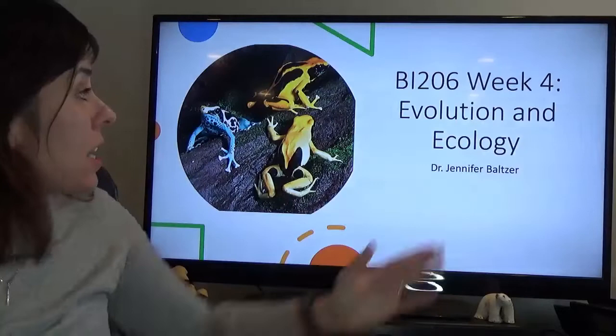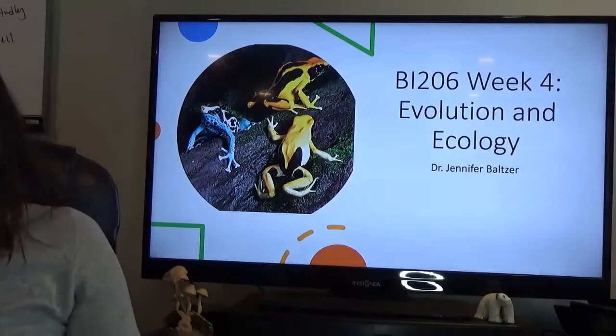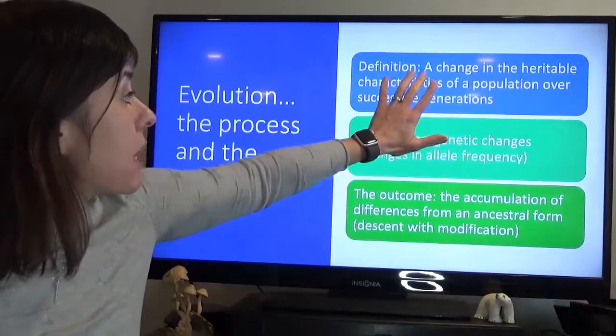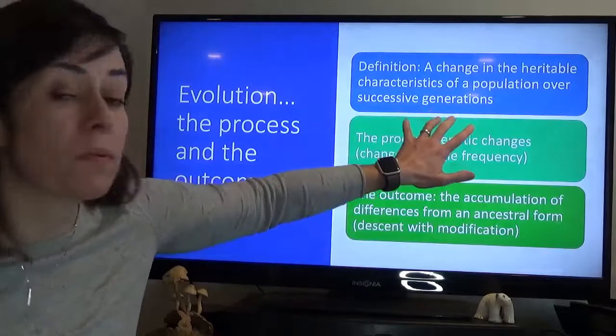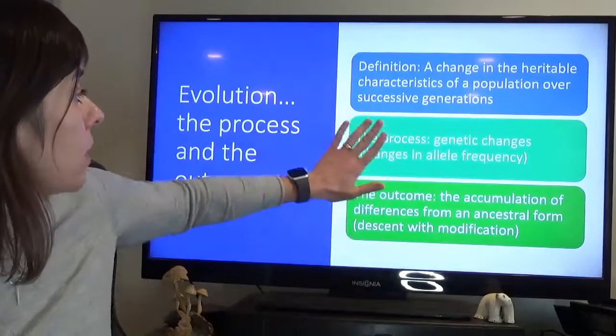Hi everyone and welcome back to Biology 206 Ecology. We're in week four and our topic this week is ecology and evolution. I'm Dr. Jennifer Baltzer. So evolution — this is all going to be a bit of a review from your first year course — but the definition of evolution is a change in the heritable characteristics of a population over successive generations. This is a long process where genetic changes are accumulated in the population through time.